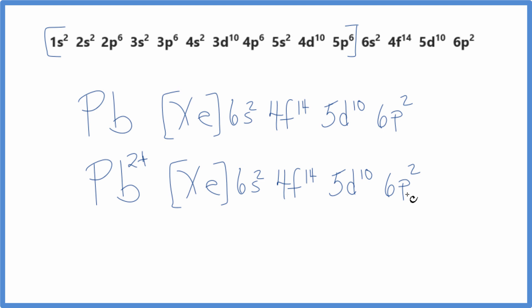Since electrons are negative, when we lose those two electrons, the element becomes positive. We have this Pb2+ ion. So this is the electron configuration for Pb2+.